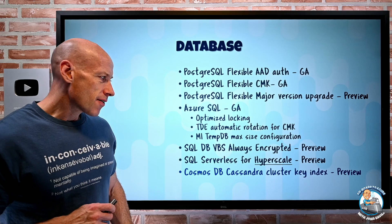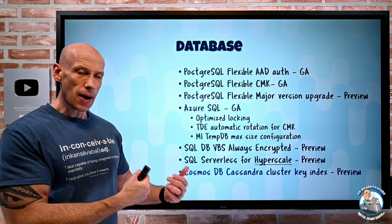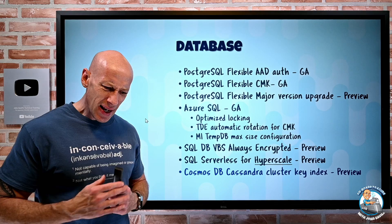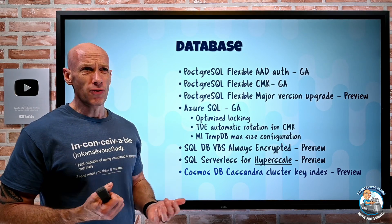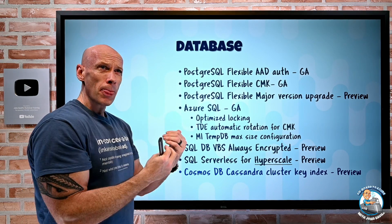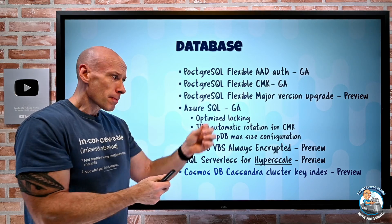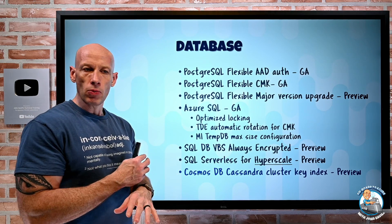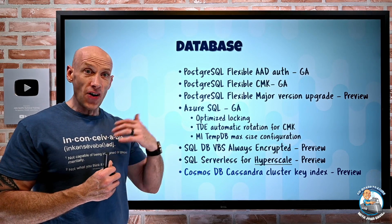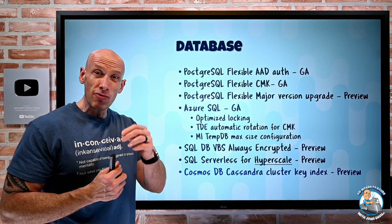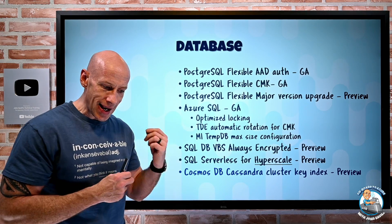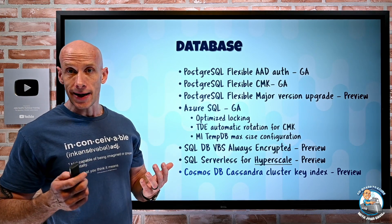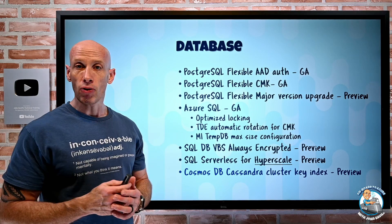Finally, Cosmos DB for Cassandra now has cluster key indexes in preview. Previously, as data grew, query performance would linearly degrade. Cluster key indexes prevent that linear degradation, enabling faster queries and reducing the request units consumed. Even for very large partitions, you'll now get consistently good performance.